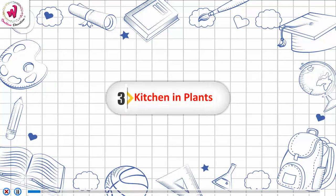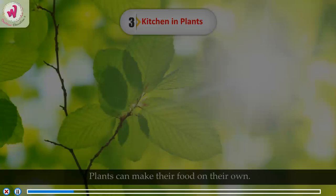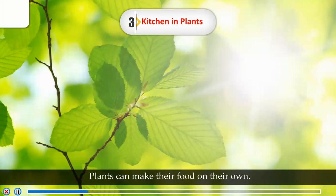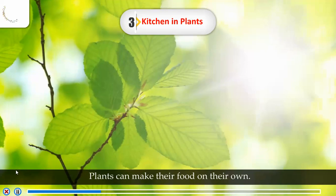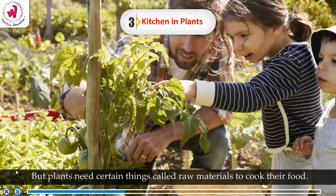Chapter 3: Kitchen in Plants. Plants can make their food on their own, but plants need certain things called raw materials to cook their food.